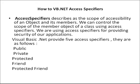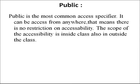Now, what is the most common accessibility? Public — it can be accessed from anywhere, that means there is no restriction on accessibility. The scope of accessibility is inside the class and also outside the class. Public is the most common accessibility.